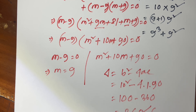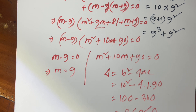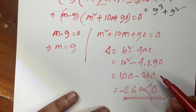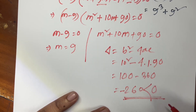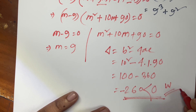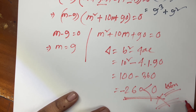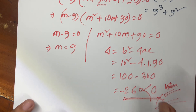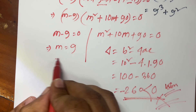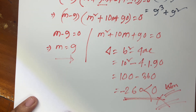The discriminant is less than 0, so if I calculate it, we find a complex number solution for that equation. So it is not possible — it is rejected. Therefore m equals 9. That is the answer. Thank you all. If you enjoy this video, please subscribe to my channel.